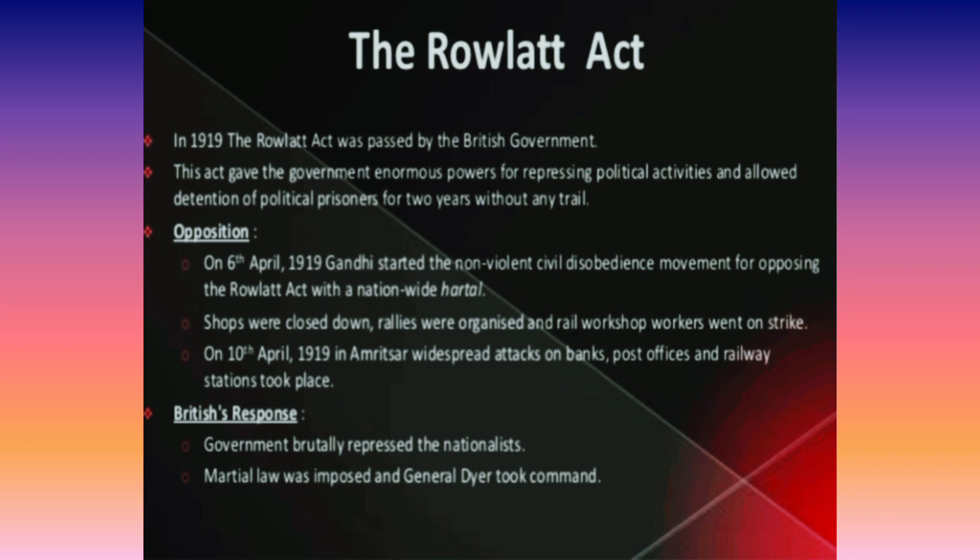In view of this call, shops were closed down, rallies were organized, rail workshops were shut, and workers went on strike. Local leaders like Saifuddin Kitchlew and Dr. Satya Pal were arrested from Amritsar, and Mahatma Gandhi was barred from entering Delhi. On 10th April, the police in Amritsar fired upon a peaceful procession, provoking widespread attacks on banks, post offices, and railway stations. In view of this, martial law was imposed and General Dyer took command.